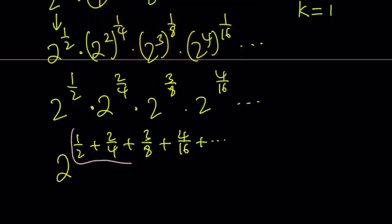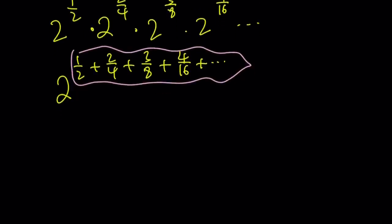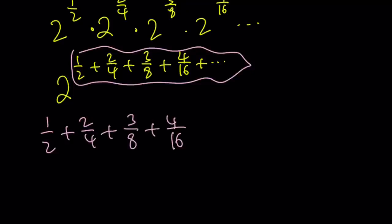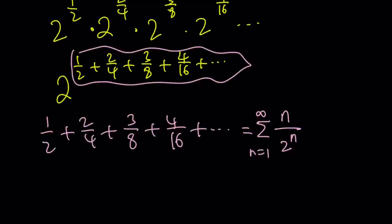We can basically write the exponents as a series. The exponent is 1/2 plus 2/4 plus 3/8 plus 4/16, so on and so forth. Notice that the numerators are positive integers and the denominators are powers of 2 — it's like we have n in the numerator and 2 to the power n in the denominator, summed from n equals 1 to infinity. Now, how do we handle such an infinite sum? The denominator tells us this has to do with geometric series, where we have the power of something multiplied by something else.